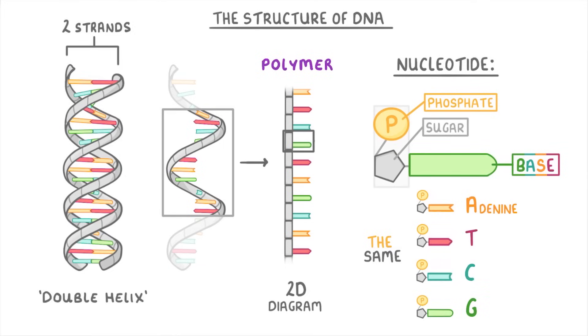Which stands for adenine, thymine, cytosine, and guanine. And this means that there are effectively four different nucleotides in DNA, one type for each of the four different bases.